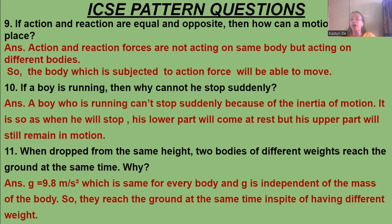Two bodies of different masses dropped from the same height reach the ground at the same time, because g = 9.8 m/s², which is the same for every body. G is independent of the mass of the body. So if you drop two bodies from the same height at the same time, they reach the ground at the same time.